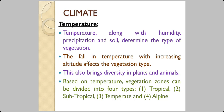When it comes to climate, temperature along with humidity, precipitation, and soil determines the type of vegetation. With increasing height there is a fall in temperature — this is known as lapse rate in geography — and this also brings out diversity in plants and animals. When you go higher up a mountain, soil depth reduces, fertility reduces, and its capacity to hold larger trees is reduced. So you find only weaker trees that can survive in cold conditions with less nutritious soil. Based on temperature, vegetation zones are divided into four types: tropical, subtropical, temperate, and alpine.